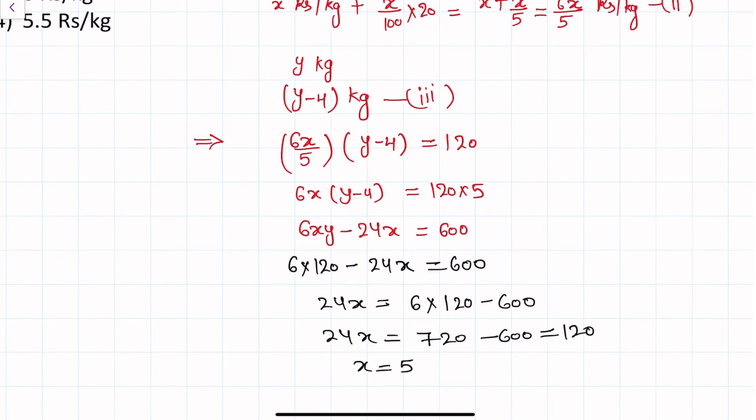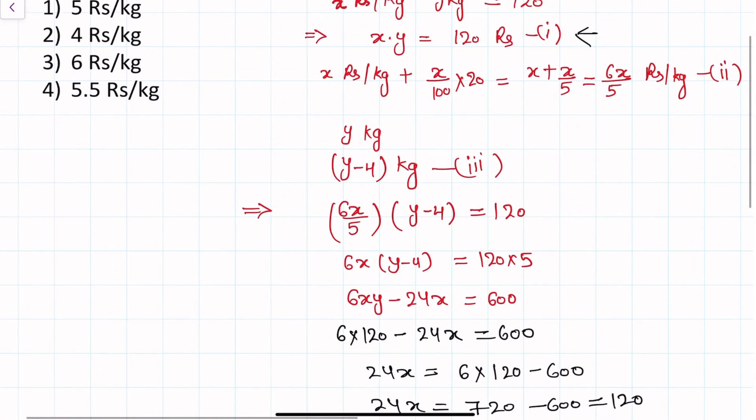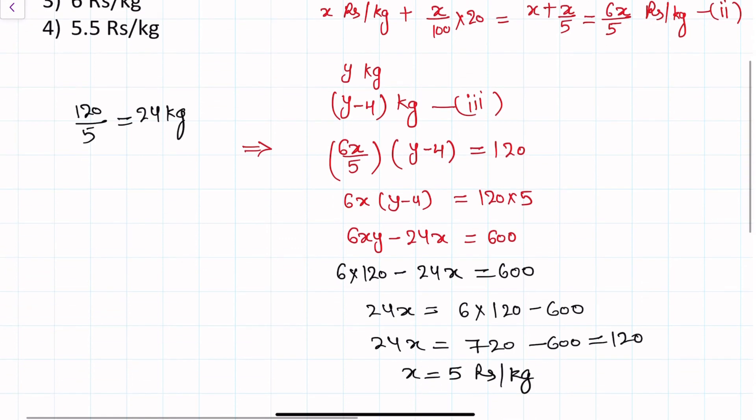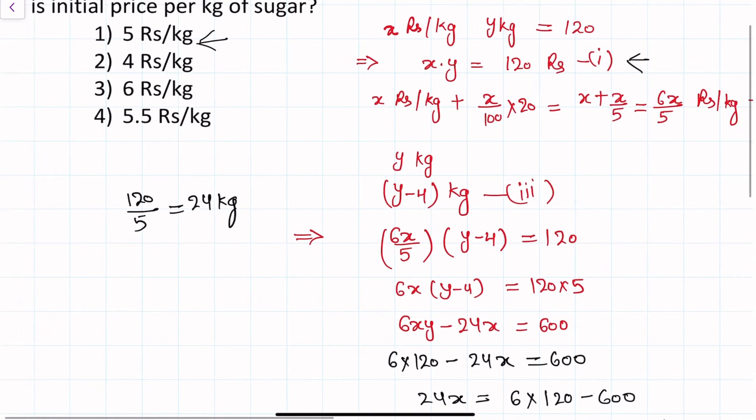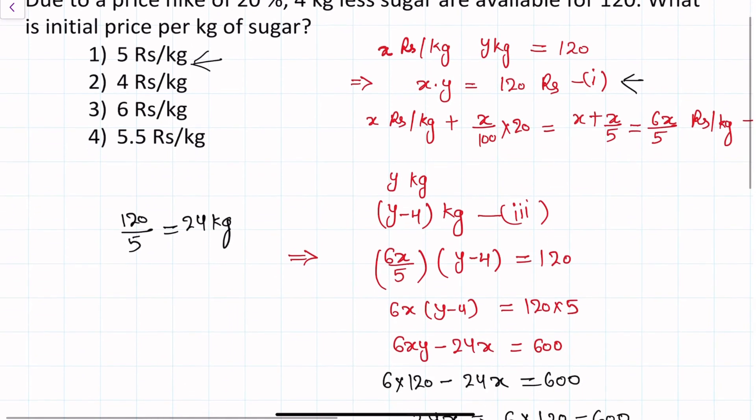X is equals to 5 rupees per kg. The initial price will be 5 rupees per kilo. In 120 rupees how much kilo will we buy? 120 divided by 5, so 24 kg sugar initially we will buy. The answer is 5 rupees per kilo, so option first is the correct option.